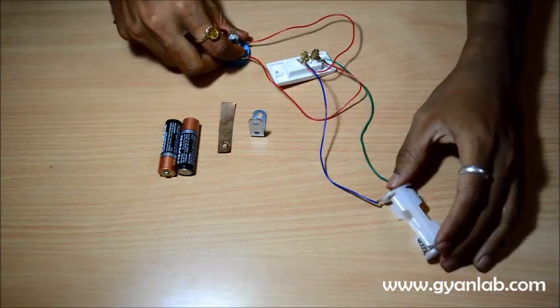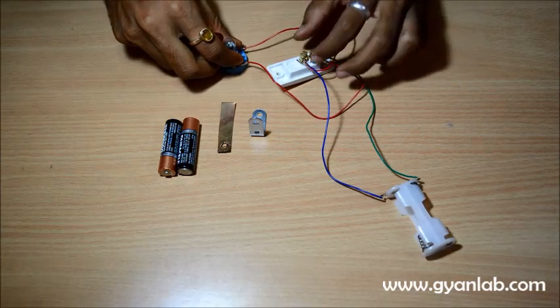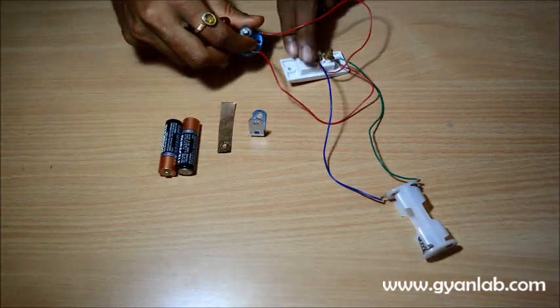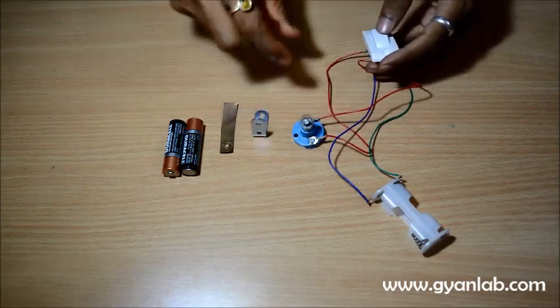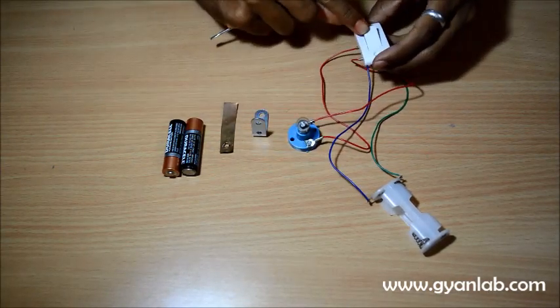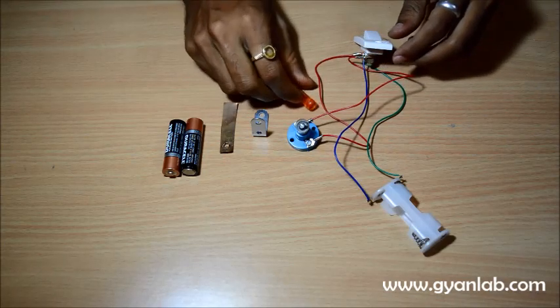As you can see I have connected the battery holder and the bulb to the switch as we had earlier stated, and I am now going to turn the switch over and now the switch is in the off position, as you would normally know.